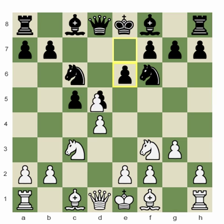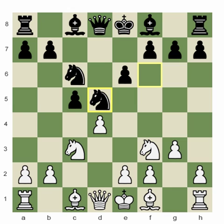That's the Semi-Taurusch Defense, after pawn takes d5, knight takes d5. If black were to capture with the pawn instead, it would have been the Taurusch Defense.